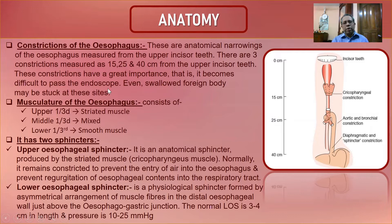These constrictions are clinically important because they make it somewhat difficult to pass an endoscope — in front there is the larynx, trachea, and aorta causing pressure. A swallowed foreign body may also become stuck at these sites.